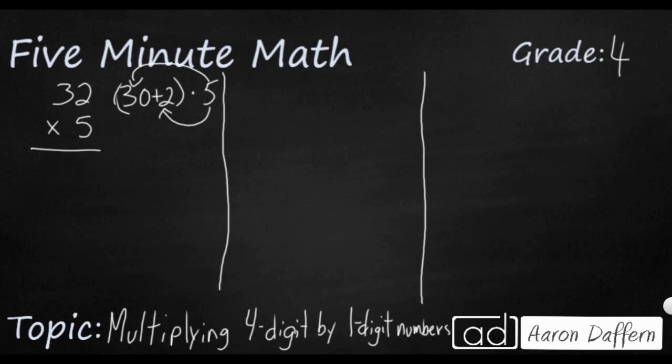First we're going to multiply 5 times 30. So 5 times 30 is going to be 150. We know that because when you multiply any number by a multiple of 10, 100, 1000, you take the two non-zero digits, 5 times 3, and you multiply those, which is 15. And then you just add how many zeros there are, which is one zero. Now if you take your 5 times 2, that's 10. Our answer is going to be 160.